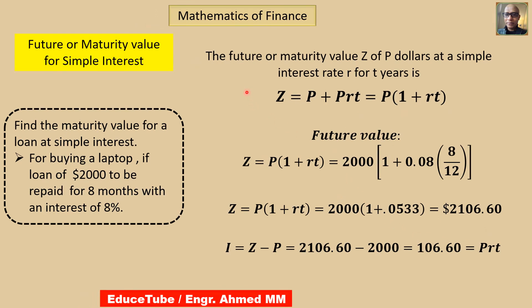Here is the future value or maturity value formula. For P dollars at a simple interest rate R for T years, we can write the interest as PRT. Principal plus interest gives the total maturity or future value. Taking P common, we can write it as P into 1 plus RT. So this is the formula for simple interest future value.